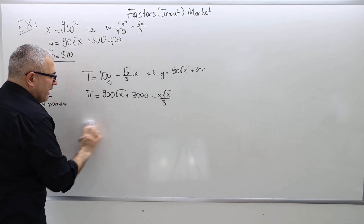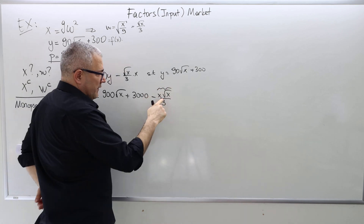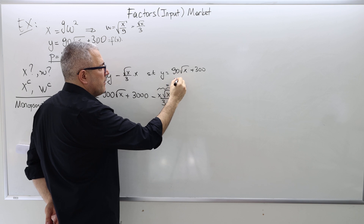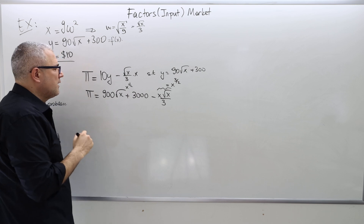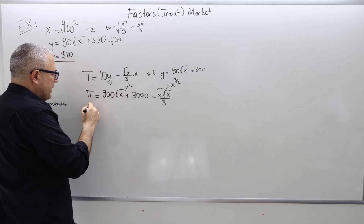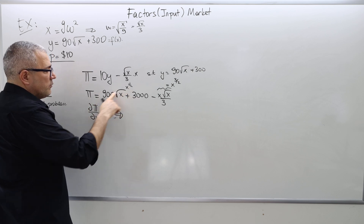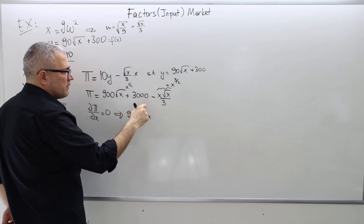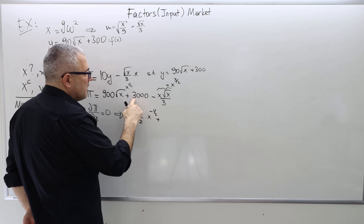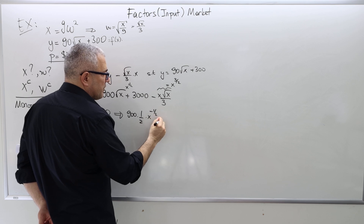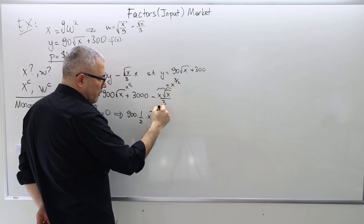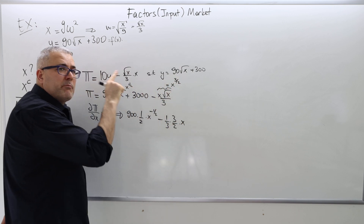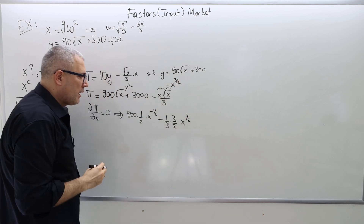To take the first-order condition, note that square root of X times X equals X to the power 3/2, and square root of X is X to the power 1/2. Taking the derivative with respect to X: the derivative of 900 times X to the 1/2 is 900 times (1/2) times X to the minus 1/2, the derivative of 3000 is zero, and minus the derivative of (1/3) times X to the 3/2 is minus (1/3) times (3/2) times X to the 1/2, set equal to zero.